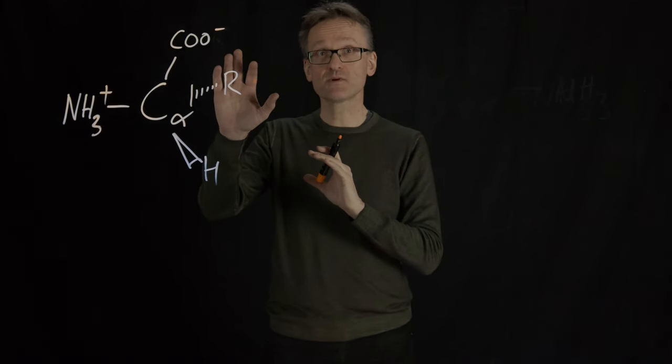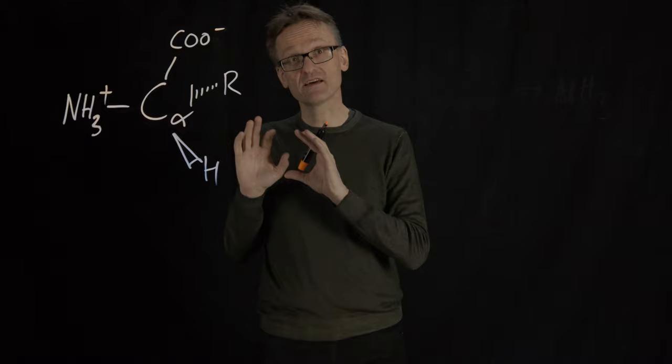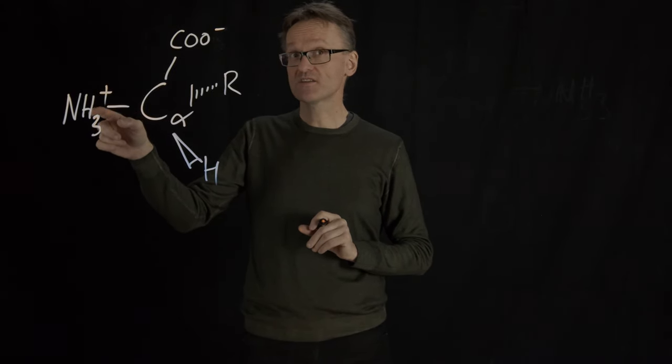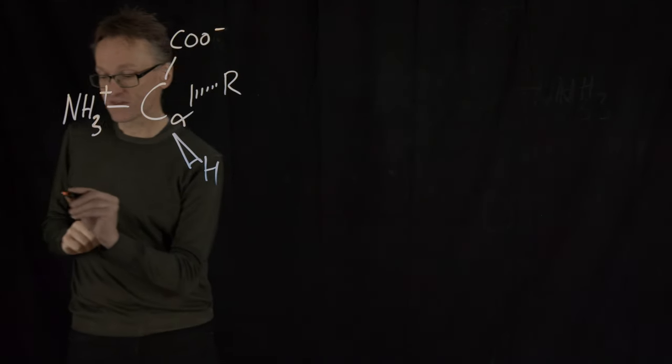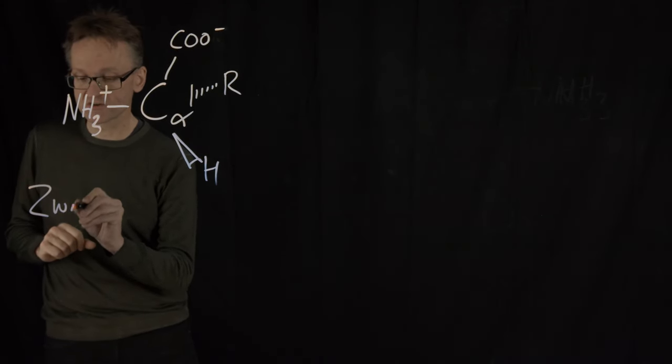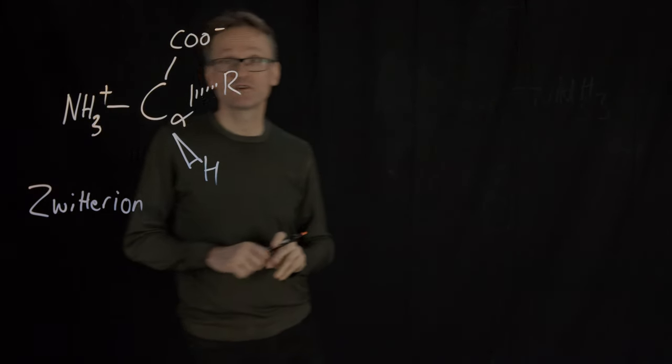So unless we have a charge on the amino acid side chain, the entire amino acid will still have neutral charge but we have one ion here that's positive and one ion here that's negative. There is a special name for that, it's called a zwitterion or they have zwitterionic properties.